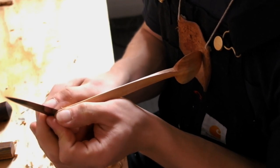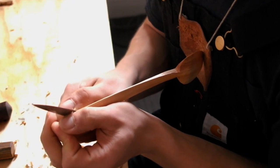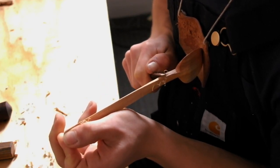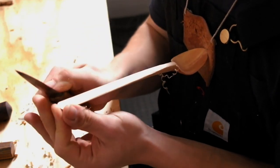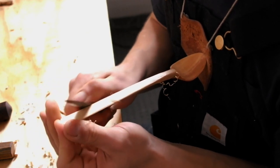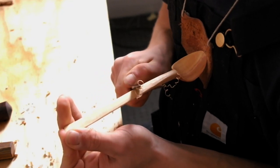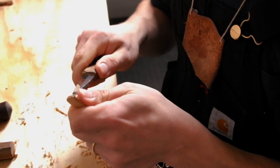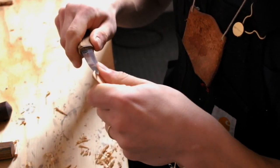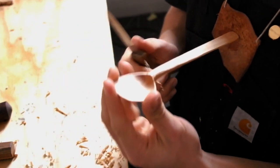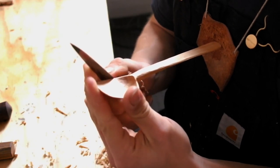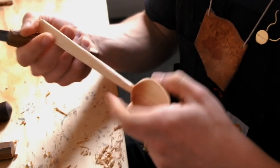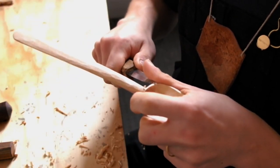I will just take the lightest cut that I can whilst maintaining a constant shaving. And I'll chase that all the way down to the neck of the spoon. Sometimes you'll feel the knife sort of catch in the grain and start to take a deeper cut than you want. You've just got to be cautious. Now I'll get these to meet up from the other side, starting at the top, coming down.